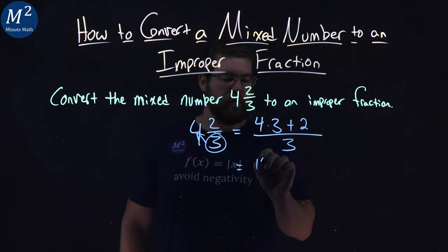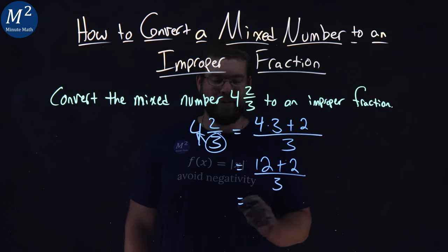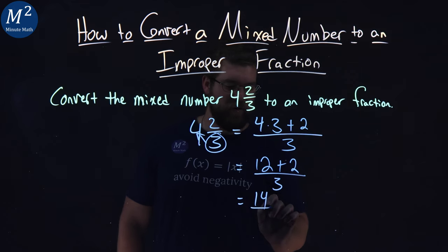Four times three is twelve, plus two over three. And twelve plus two is fourteen over three.